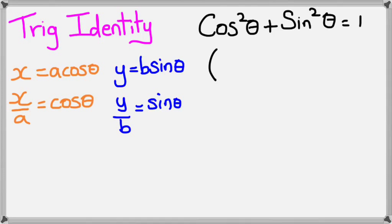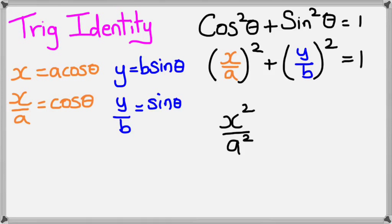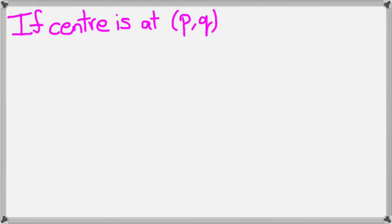So cos squared theta - that's x over a squared - plus sine squared theta, which is y over b squared, and that equals one. Expanding this out we get x squared over a squared plus y squared over b squared equals one. As you can see folks, that is our general equation of an ellipse that we already know.